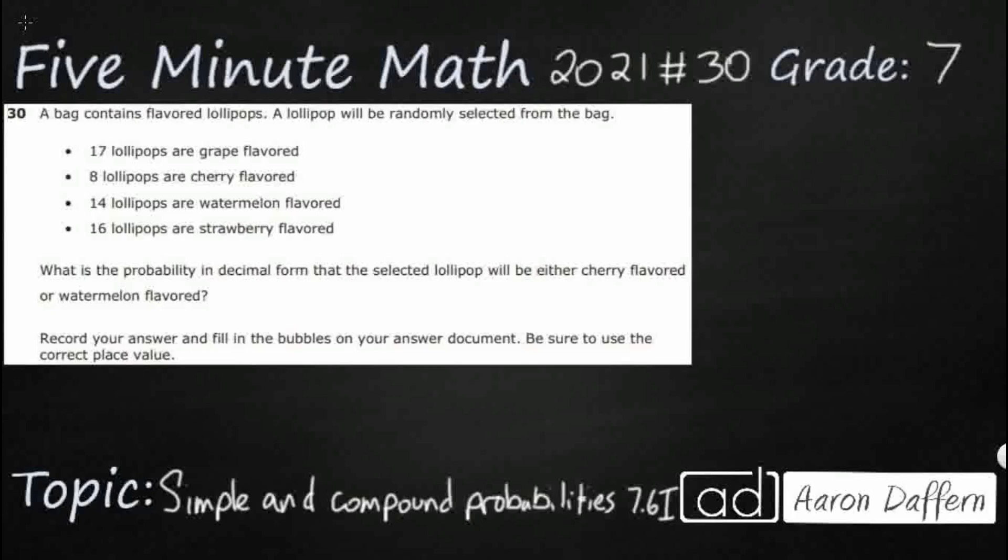Hello, and welcome to Five Minute Math. Today we are looking at the 7th grade concept of simple and compound probabilities. This is standard 7.6i in the great state of Texas, and we are using item number 30 of the 2021 released STAAR test.